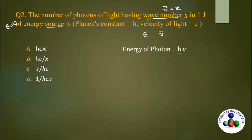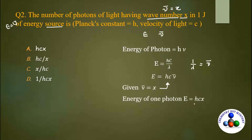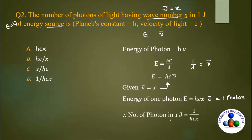Energy of photon = hν = hc/λ, and since 1/λ is wave number, this becomes hcν̄. Substituting ν̄ = x, the energy of one photon is hcx joules. Therefore, one joule contains 1/(hcx) photons. Option D is the correct answer.